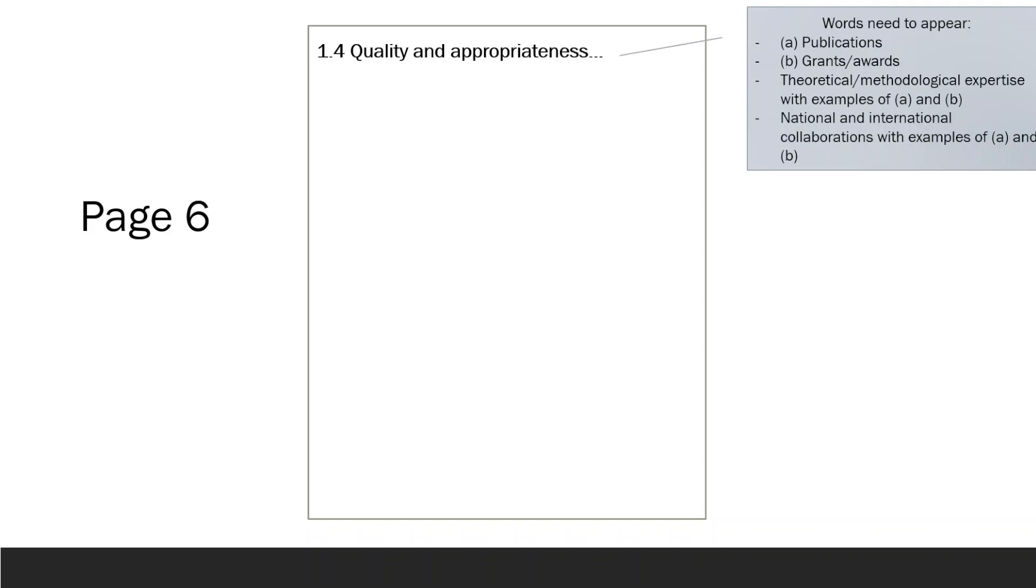Devote one-third of page 6 to the quality and appropriateness of the researcher's professional experience, competences, and skills. In a manner similar to how you provided the biosketch for your supervisor, you need to describe your own achievements. Focus particularly on your accomplishments within the project area that you are proposing. Discuss your theoretical and methodological expertise and provide examples of publications, grants, and awards that demonstrate your proficiency. Highlight your collaborations, especially those that can be relevant and beneficial for the proposed project.